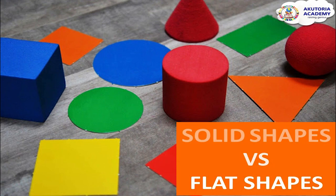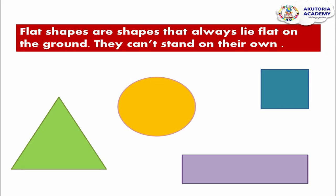Welcome to today's class! Today we will be discussing solid and flat shapes. Flat shapes are shapes that always lie flat on the ground — they can't stand on their own. We've learned flat shapes in one of our videos, so let's do a quick review. Some examples of flat shapes are: triangle, circle, square, and rectangle.